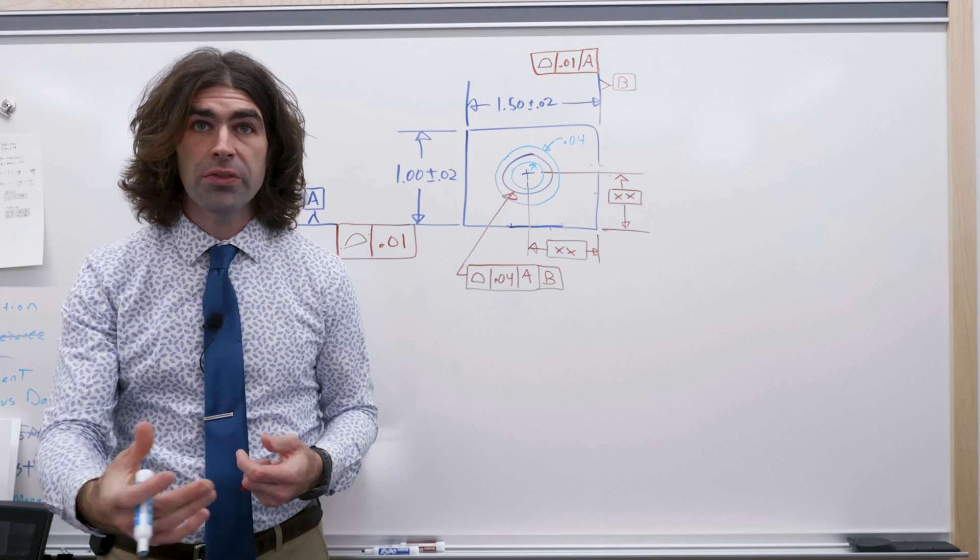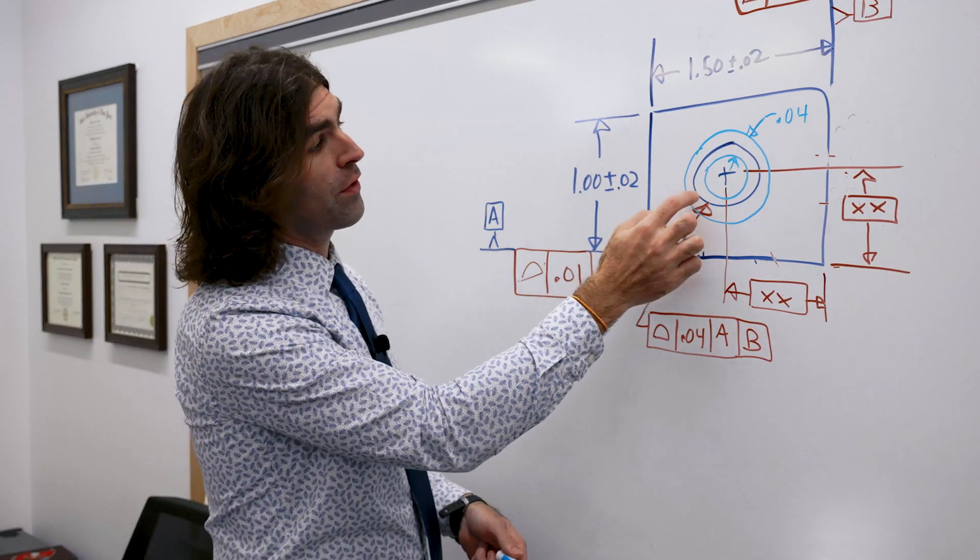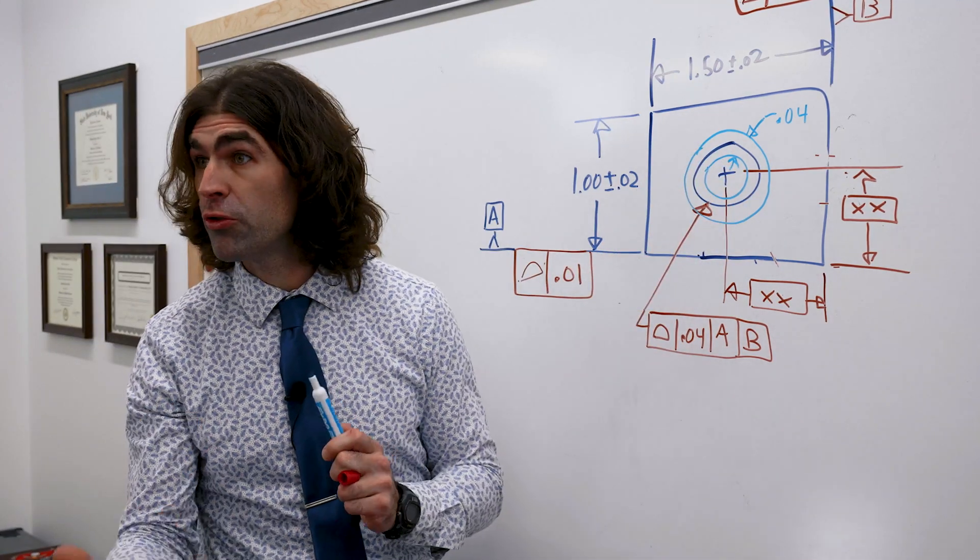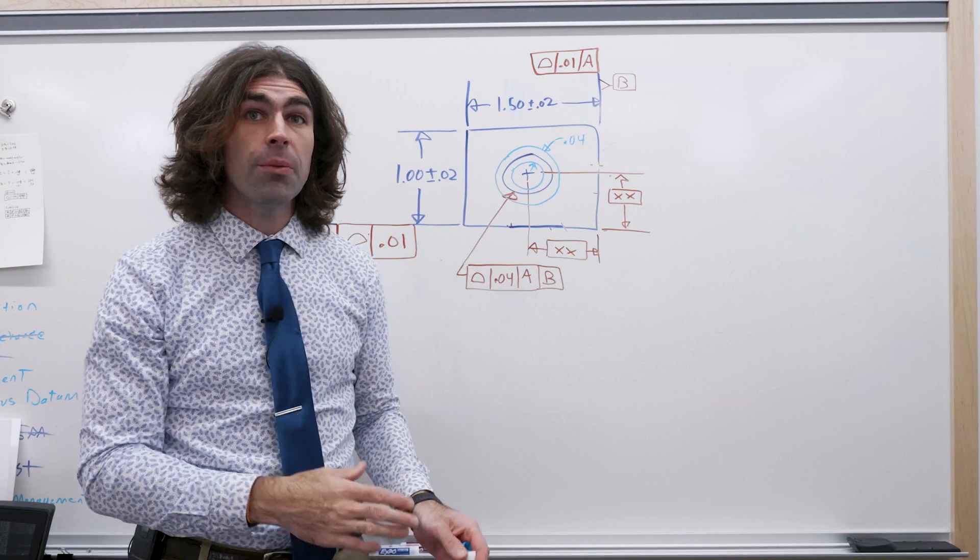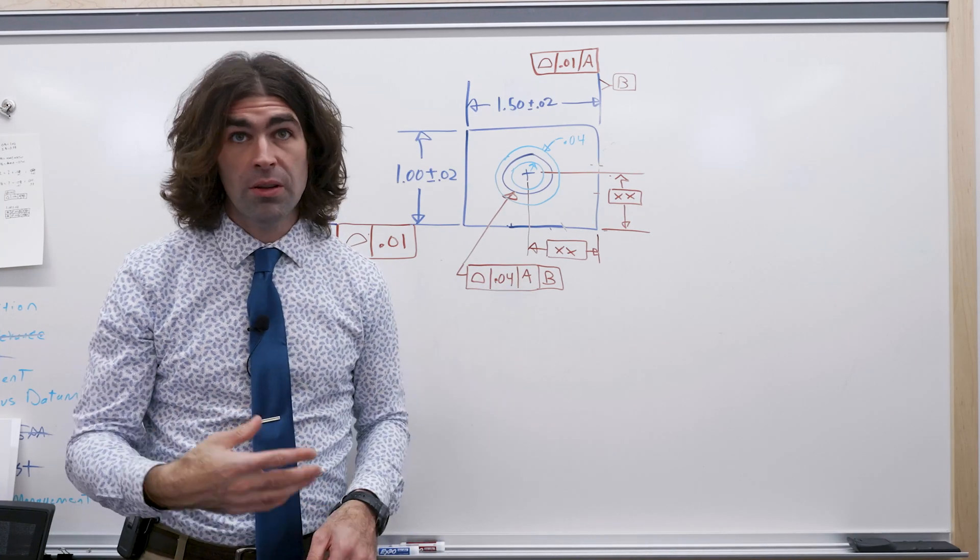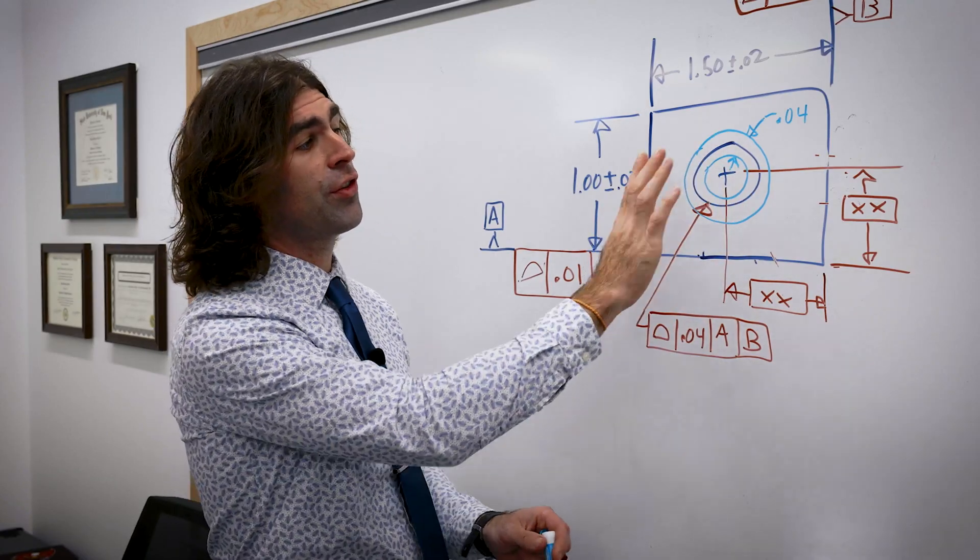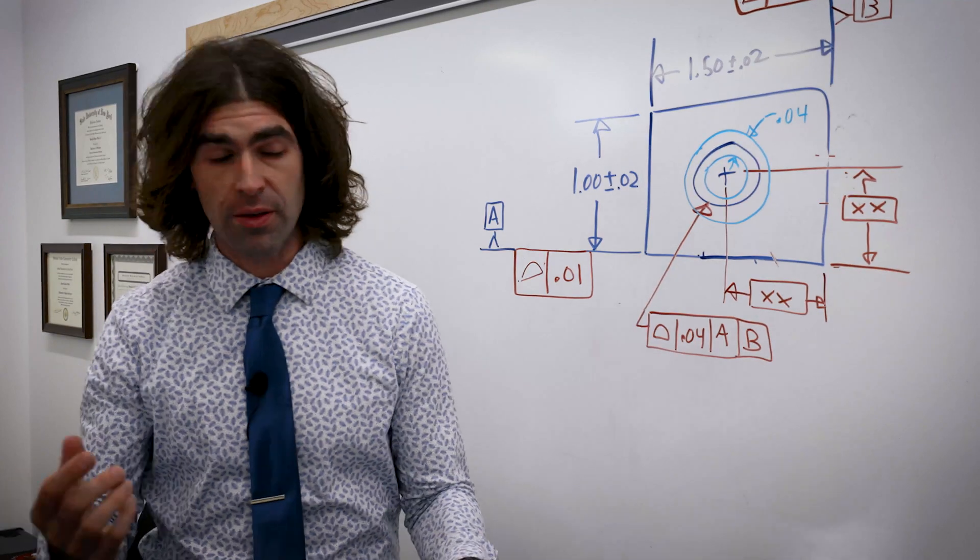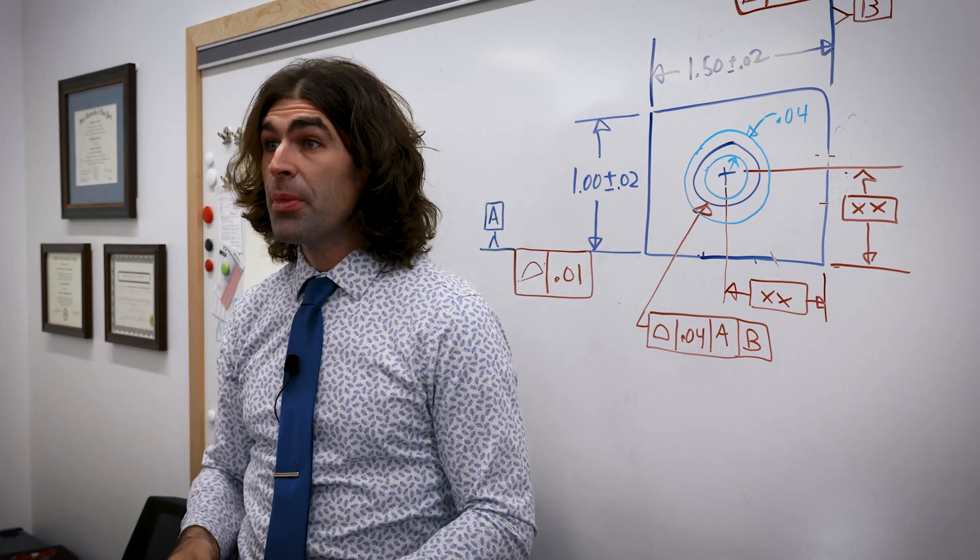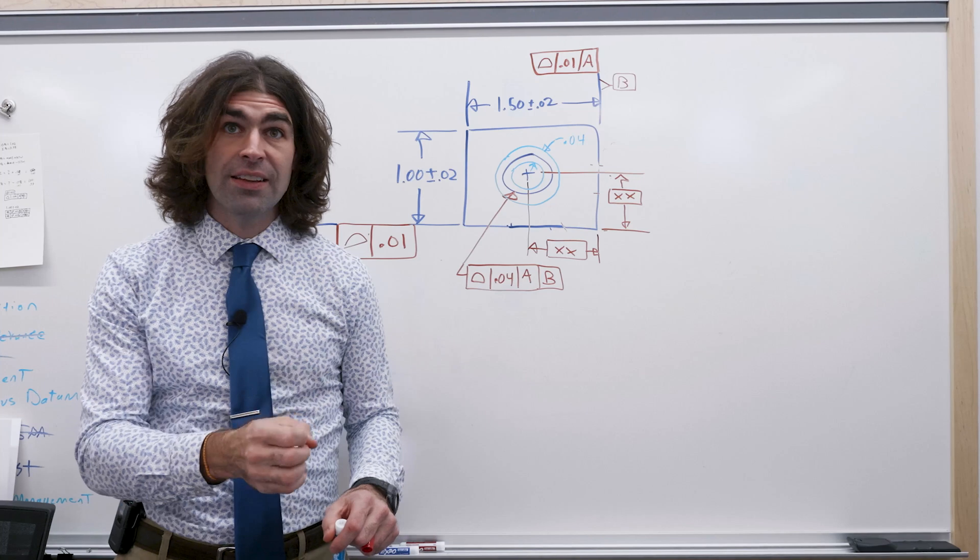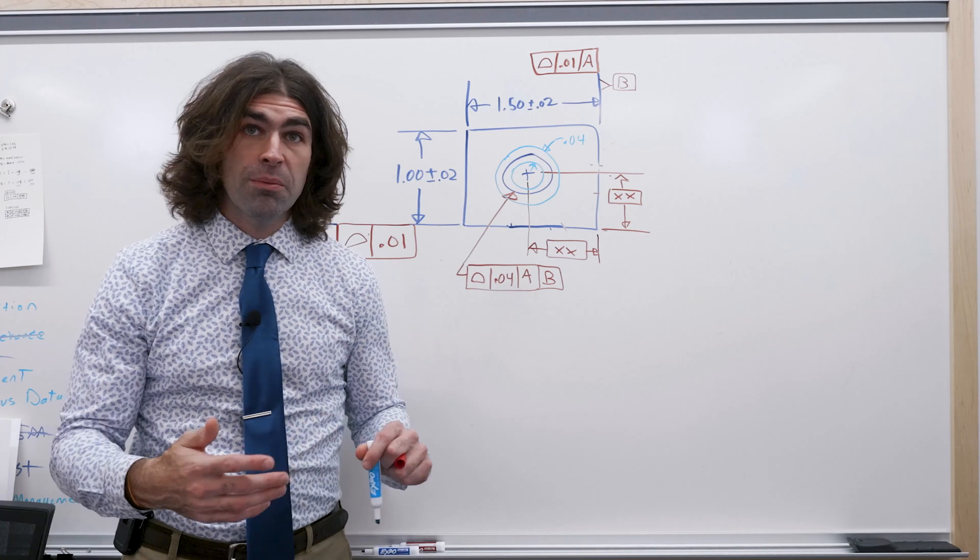So it's saying that the tolerance zone is essentially two circles that go around the true profile of that hole. So this dark blue line is the true profile, what the hole should be, and these light blue circles are where the tolerance zone boundaries are. Now this is really different from position. Let me just go over this one more time. The hole has to lie within these two boundaries that are 40 thousandths apart, the value of the profile.